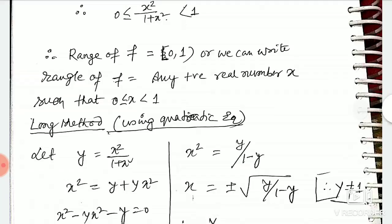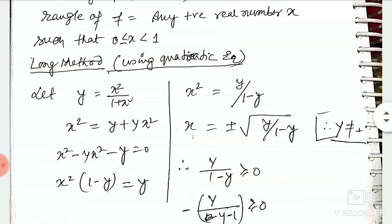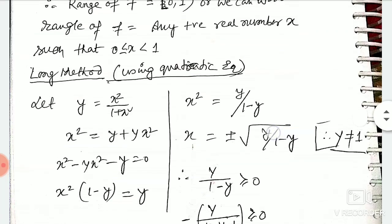Let y = x²/(1+x²). Now make an equation. y(1+x²) = x². yx² - y = 0. x² = y/(1-y). x = ±√(y/(1-y)). That means y's value can never be 1.